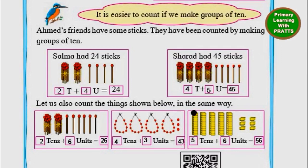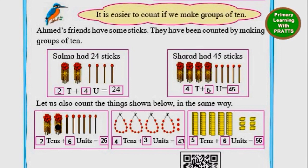Now they have stacked blocks as tenths. 1, 2, 3, 4, 5 — 5 tenths. How many single blocks are there? 1, 2, 3, 4, 5, 6 — so 6 units. The answer is 56. That is how you count them together in bundles of 10 and units.